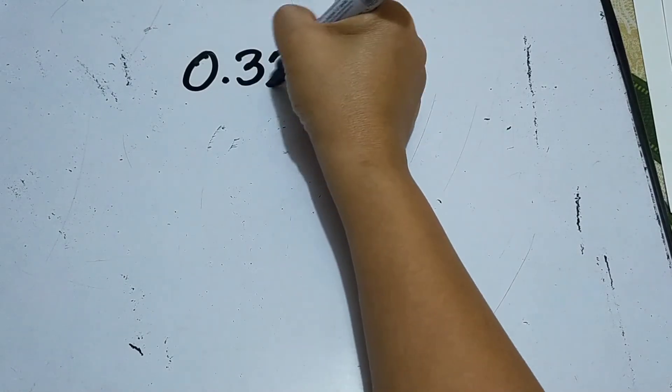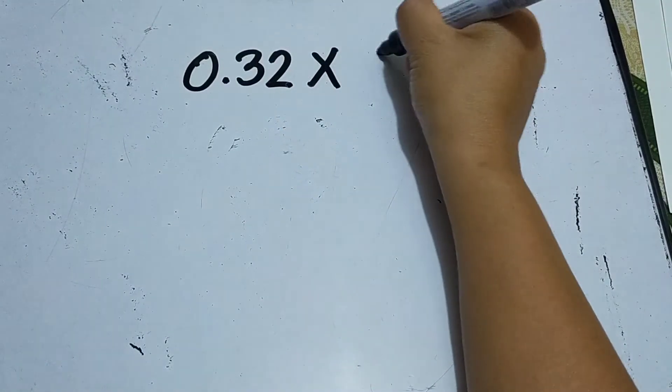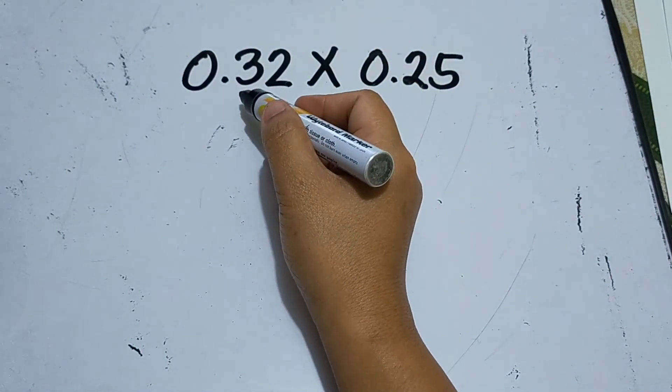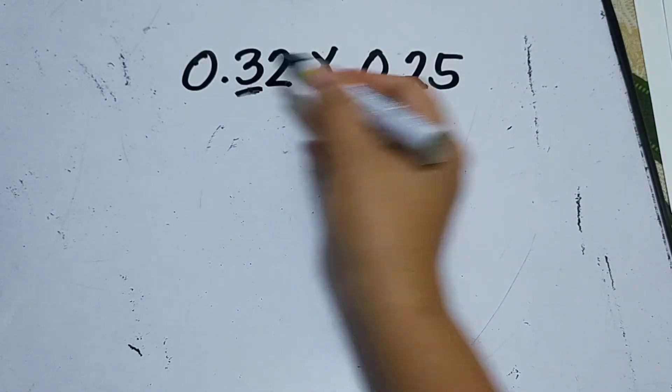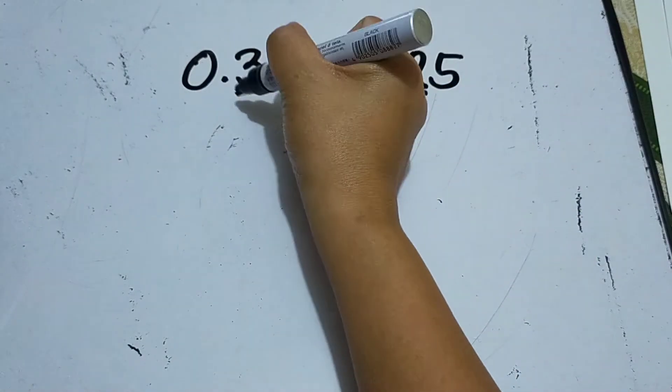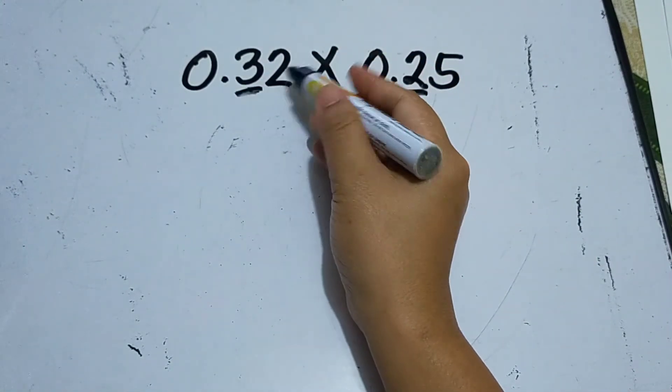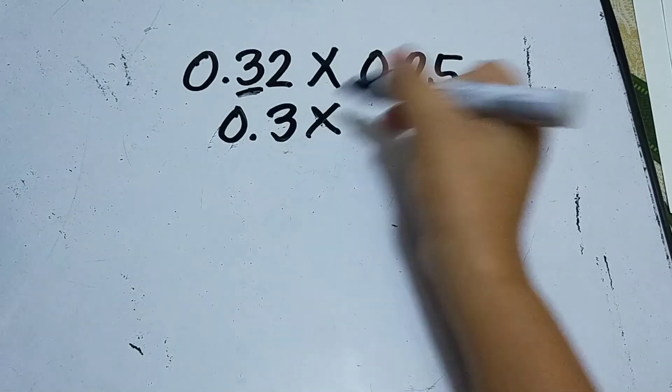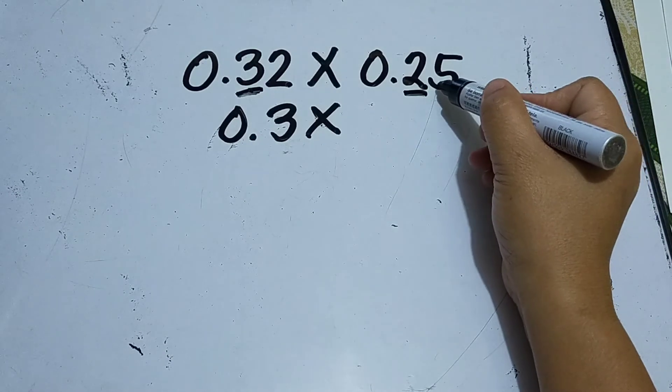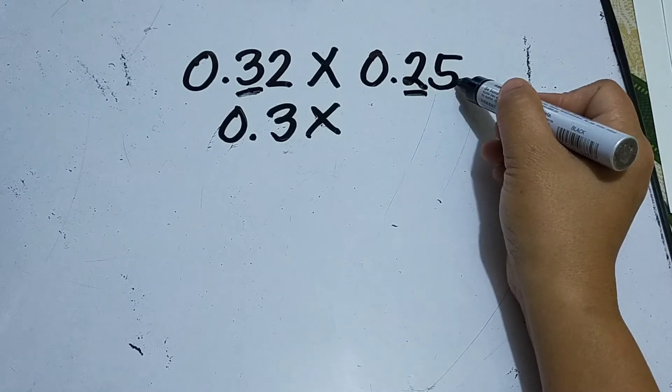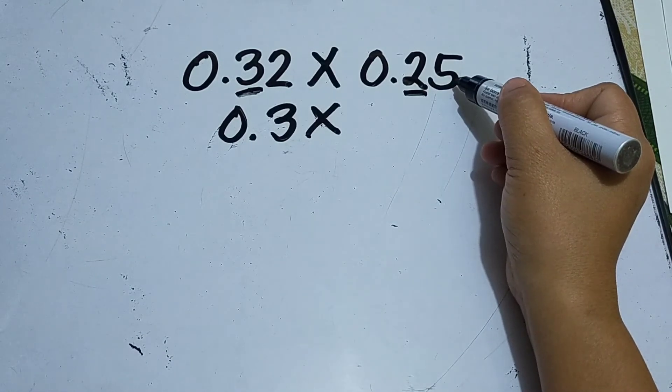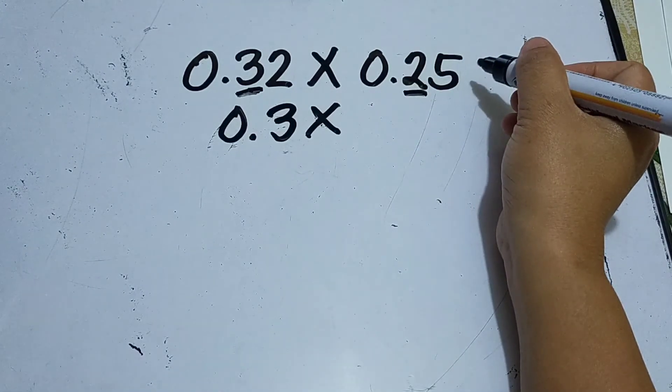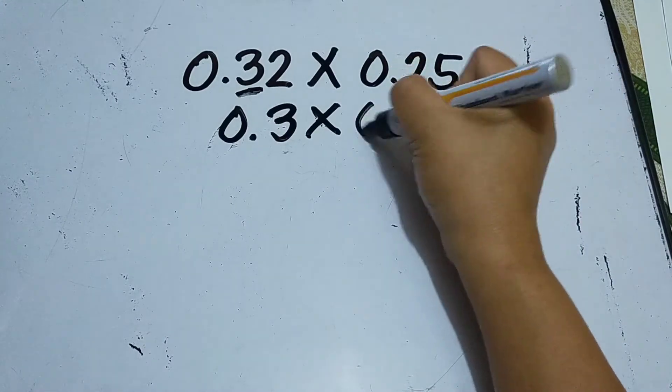0.32 hundredths times 0.25 hundredths. Okay, so we round up to the nearest tenths, both the multiplicand and the multiplier. Since the digit to the right of three is two, we round down, so three tenths is the answer. Times this one - since the digit to the right is five, we round up. So 0.25 hundredths when rounded off becomes three...